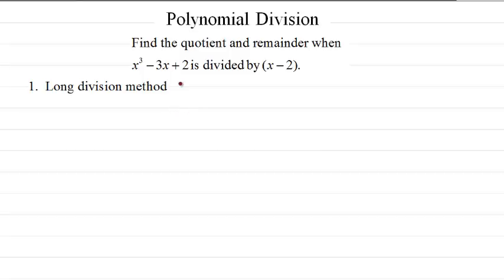Polynomial division. We're going to do this example. First we're going to use the long division method. So we write the problem here: x cubed, because we've got no square term there, so we just write 0 x squared, then minus 3x plus 2.